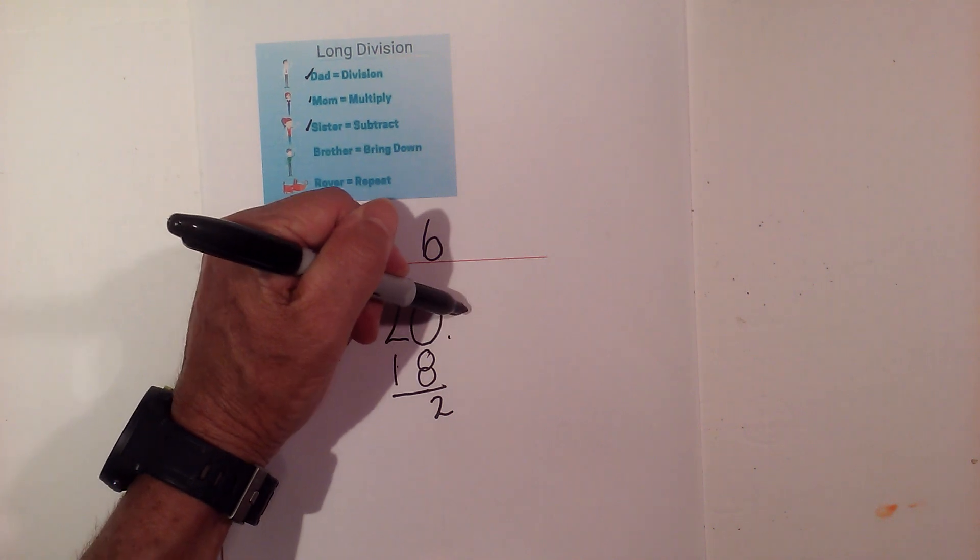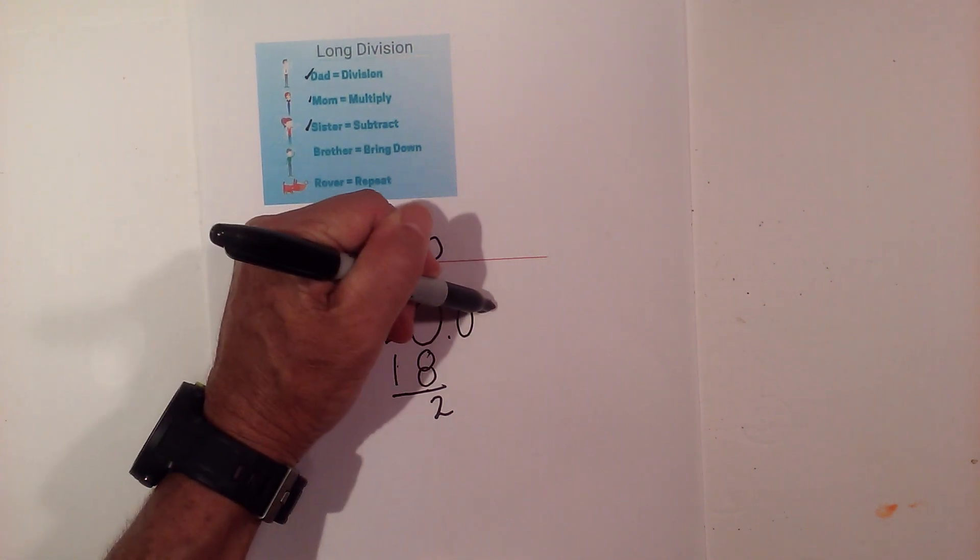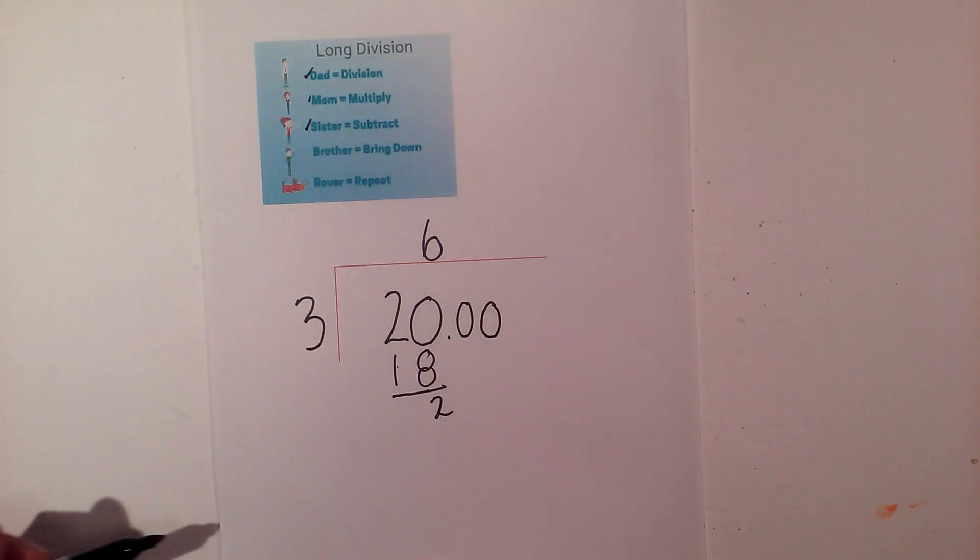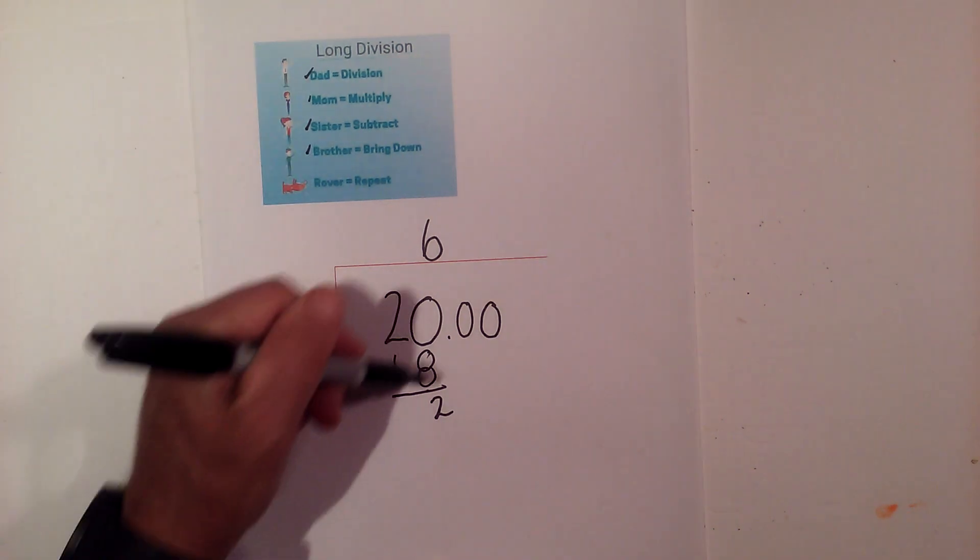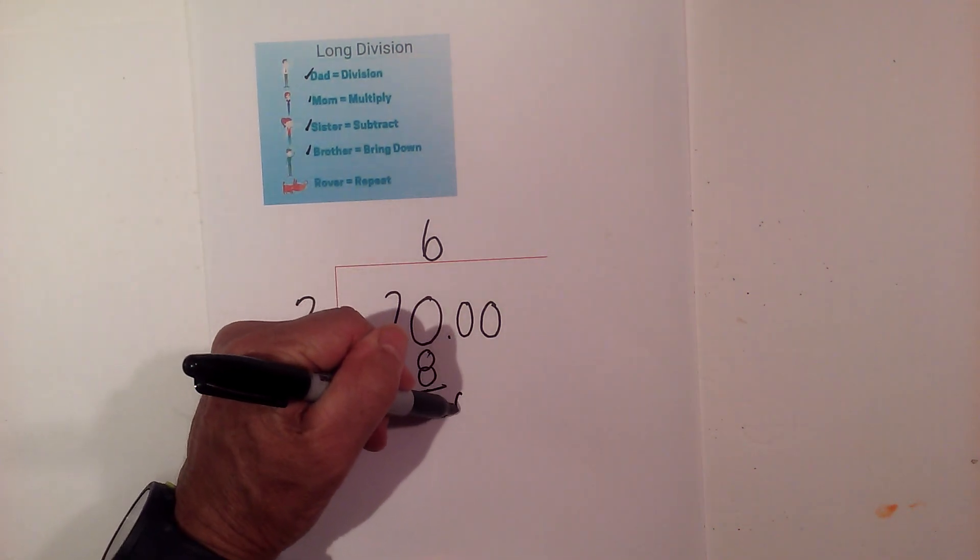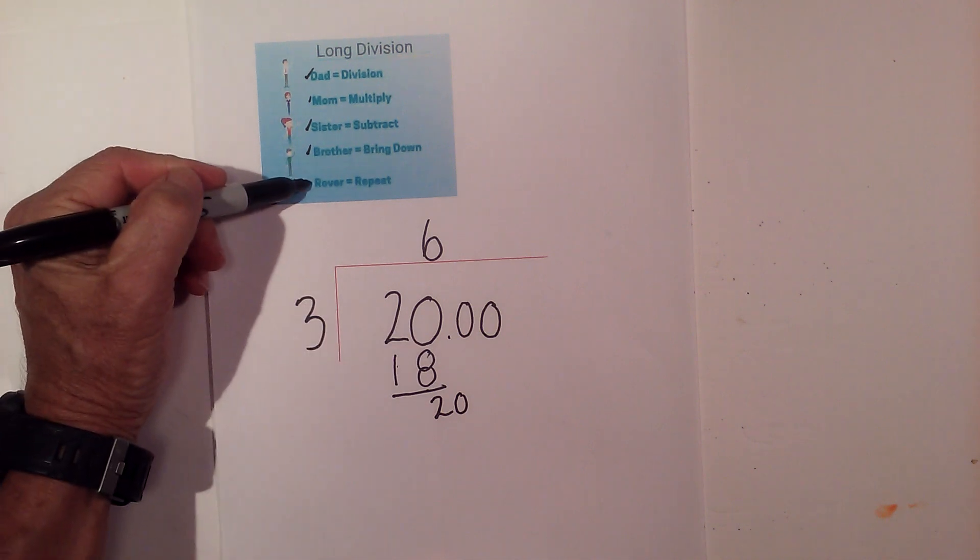So I'm going to write a decimal and I'm going to put a 0 here, and I'm going to go ahead and add two 0s. Okay, so now I'm at brother. I'm going to bring down the 0 and I'm going to repeat.